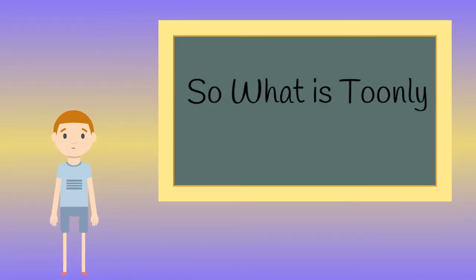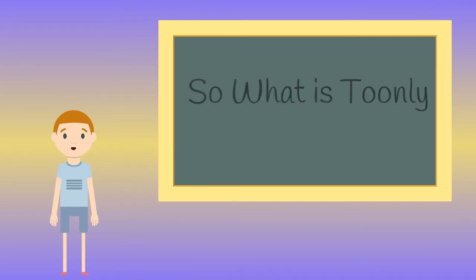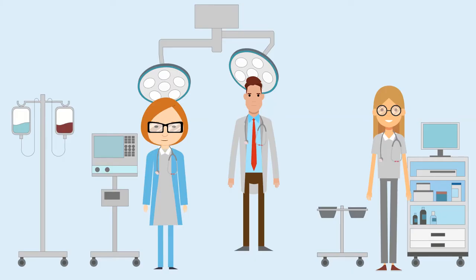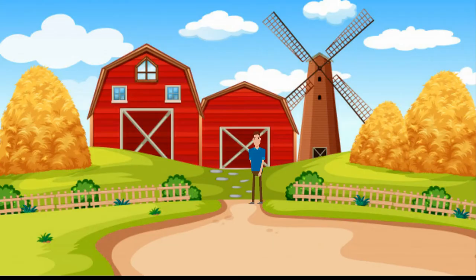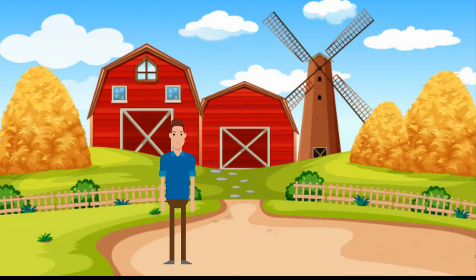So what is Toonely? What do you get for $67, or £50 in English money? Let us take a look. Well, you get 10 scenes and 32 characters, which you can have do different actions. You also get loads of backgrounds which you can use, and you can also add your own backgrounds, so there's lots of scope when using Toonely.